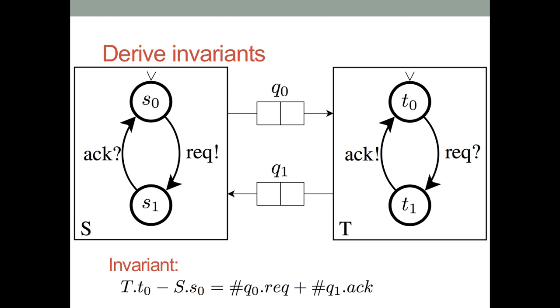The invariant that is found for this example is an equality, that on the left-hand side states something over the state of the protocol and on the right-hand side something on the number of messages that is in the queues. And also here we can see that if both process T and process S are in their initial state, then the left-hand side is zero, so the right-hand side should be zero as well, indicating that there are no en route messages.